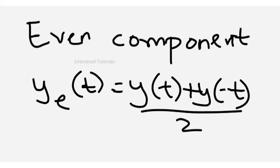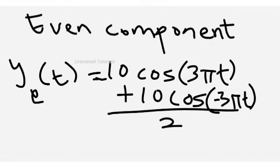First we will find the even component. The even component formula is [y(t) + y(-t)] / 2. So we take the original signal plus its time-reversed version and divide by 2. We have taken the original signal 10cos(3πt) and added it to 10cos(-3πt) — substituting minus t in place of t — and then divided by 2.